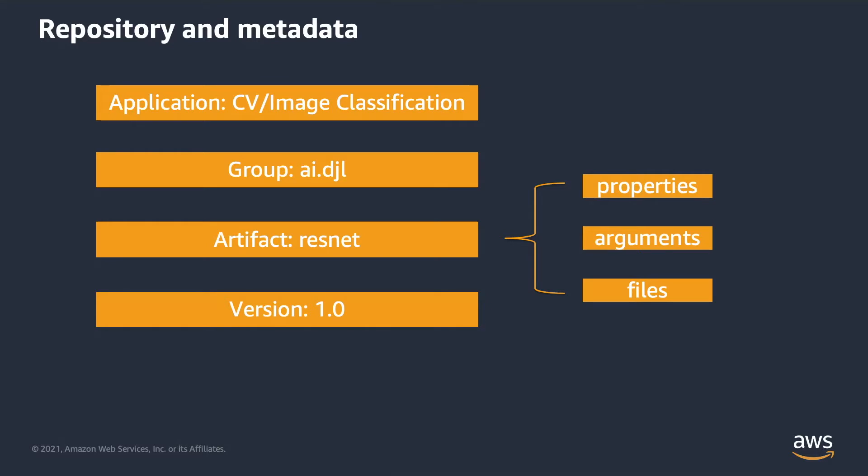In this diagram, ResNet is a family sharing the same neural network architecture. For each individual ResNet model, it has its own properties, such as how many layers there are — like ResNet 18 or ResNet 50, which have 18 and 50 layers — and which flavor of the network it uses, like ResNet V1, ResNet V2, etc.